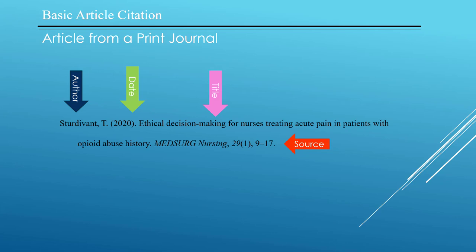Then the source information. In the case of an article from a print journal, that is the journal name in italics, followed by a comma, then the journal edition number with the issue number in parentheses, followed by a comma, then the page numbers of the article in the journal, followed by a period.